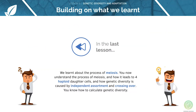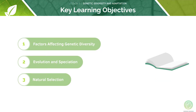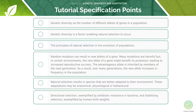In the last lesson we looked at the process of meiosis and how to calculate genetic diversity. Here are the key learning objectives for today's lesson: first we will look at the factors affecting genetic diversity, then at evolution and speciation, and finally at natural selection. Here are the AQA specification points for today's lesson — feel free to pause the video now and have a read through them before we begin.